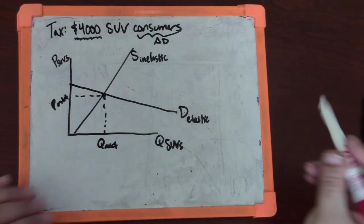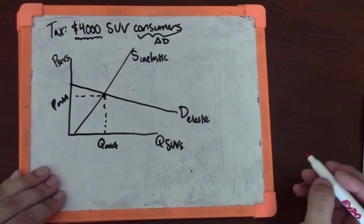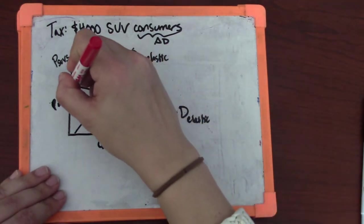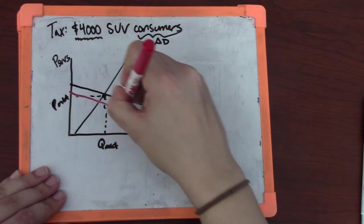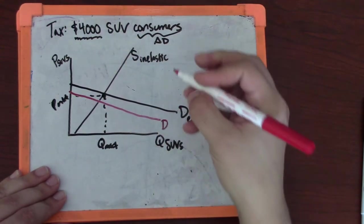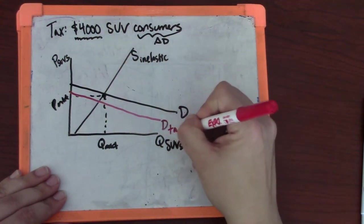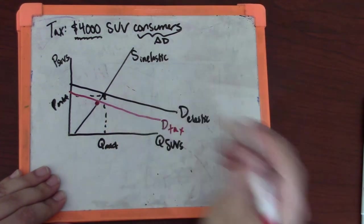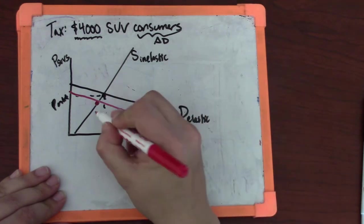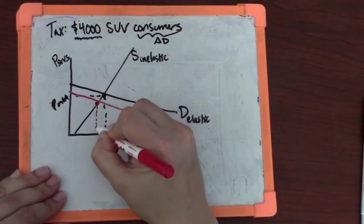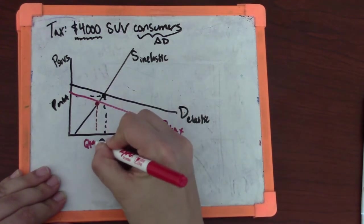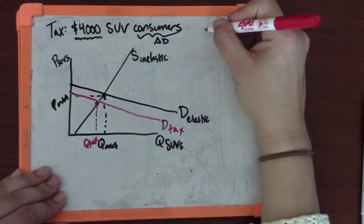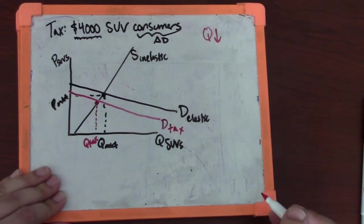Because this is paid by consumers, the first thing that we need to do is show demand going down. I'm just going to do a parallel shift of the demand curve. The next thing we do is we look for where that new demand curve hits the old supply - that's our new equilibrium. The first thing that the tax does is it decreases the quantity.